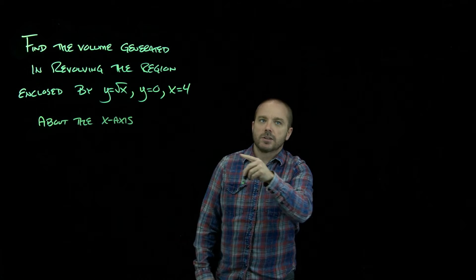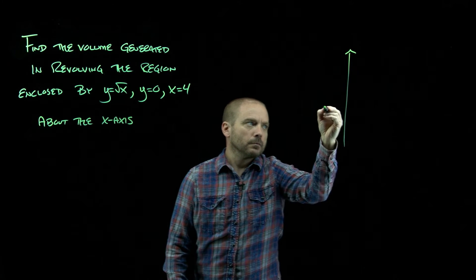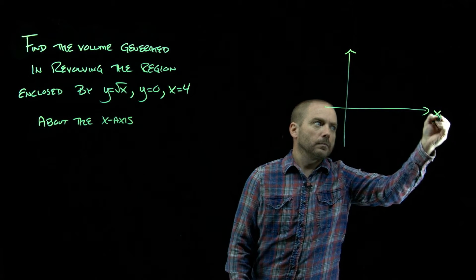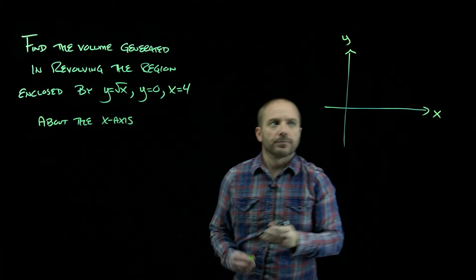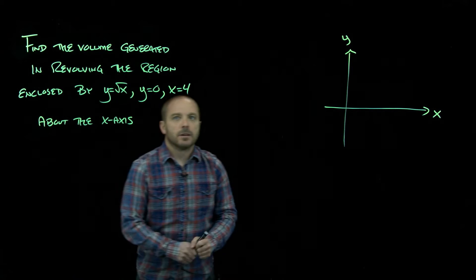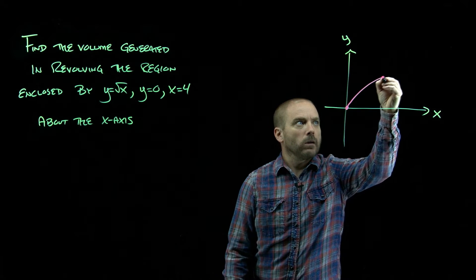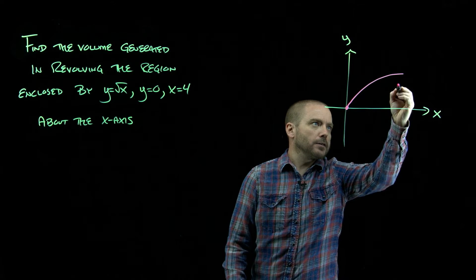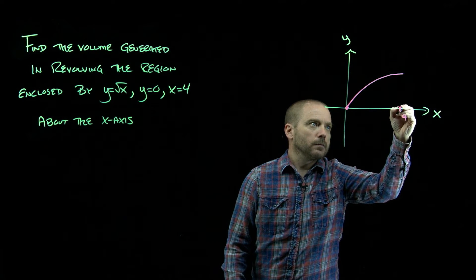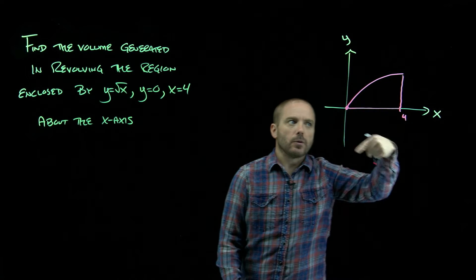So let's draw that region to get a sense of what's going on. And so we've got our square root function, and we're only going here to x equals four, and y equals zero. So that's our region.